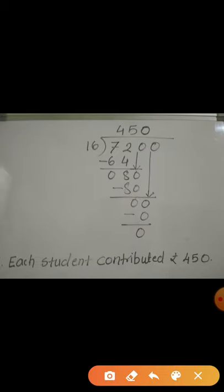Here is the division: I divide 7,200 by 16. Read the table of 16 until you get close to 72. 16×1=16, 16×2=32, 16×3=48, 16×4=64, 16×5=80 — but 80 is more than 72, so we use 16×4=64. 72 minus 64 = 8. Bring down the next digit to get 80. 16×5=80, so 80 minus 80 = 0. Bring down the last 0, giving 0. 16×0=0, and 0 minus 0 = 0. The remainder is 0 and the quotient is 450.